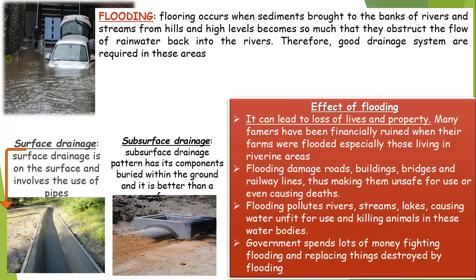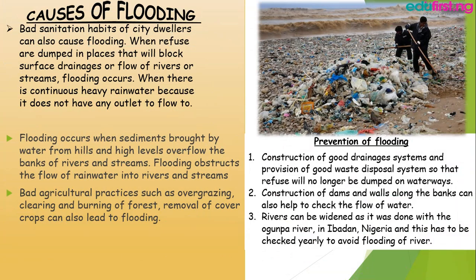The causes of flooding include: first, bad sanitation — when you clean your house and environment, you should dispose of waste where it ought to go. Second, flooding occurs when sediment brought by water from hills and high levels overflows the banks of the river. Third, bad agricultural practices like overgrazing, clearing and burning of forests, and removal of cover crops.